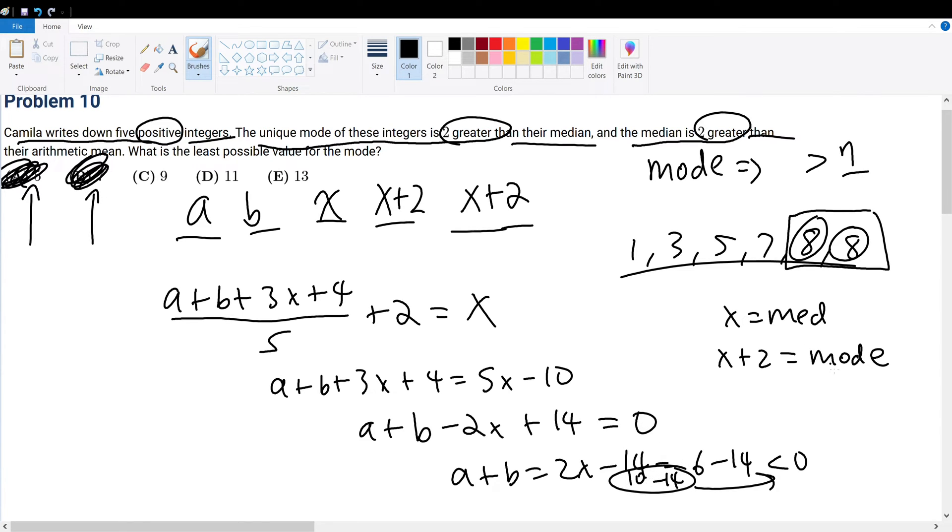What about c? Well, if the mode is equal to 9, then the median will be equal to 7. But 7 times 2 minus 14 would give 0. If that's the case, a is equal to negative b, meaning that one must be positive and one must be negative. Therefore, since we have all 5 numbers to be positive, none can be negative. So c is out of the consideration as well.